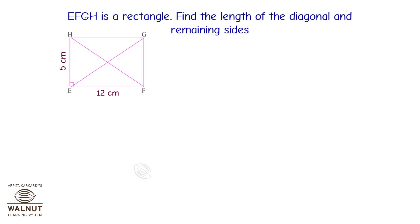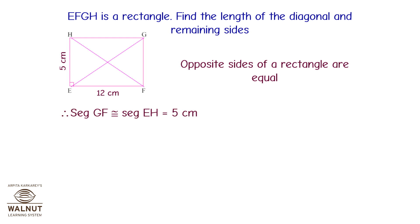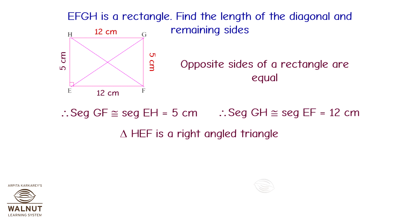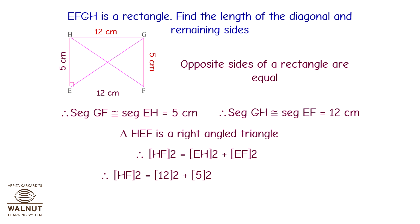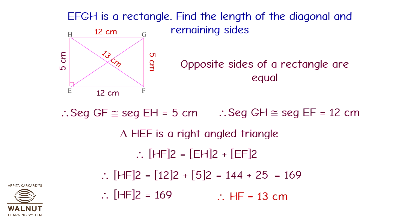EFGH is a rectangle. Find the length of the diagonal and remaining sides. Opposite sides of a rectangle are equal, so GF = EH = 5 cm and GH = EF = 12 cm. Triangle HEF is right-angled, so HF² = EH² + EF² = 12² + 5² = 144 + 25 = 169. Therefore HF = 13 cm.